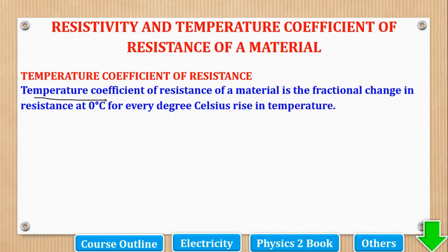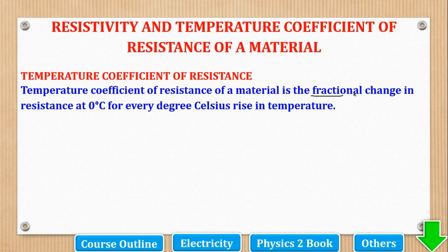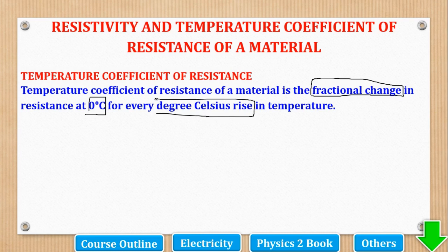By definition, temperature coefficient of resistance — TCR for short — of a material is the fractional change in resistance at 0 degrees Celsius for every degree Celsius rise in temperature. Those three keywords are needed: fractional change, the temperature at 0 degrees Celsius, and for every degree Celsius rise in temperature.